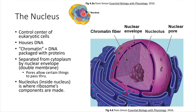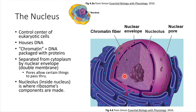We like to say the nucleus is like the control center of a eukaryotic cell — this is where all of the instructions are kept. The DNA housed inside is packaged in a special way with proteins, and that packaged form of DNA is called chromatin.